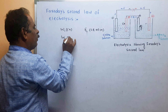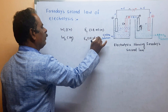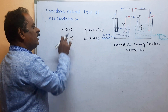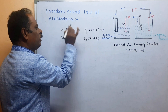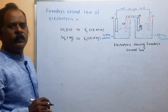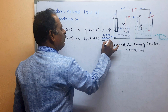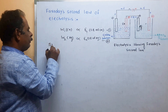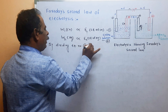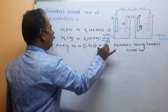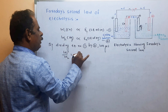W2 is the weight of silver deposited on the cathode and E2 is the chemical equivalent of silver (Ag). Since the two electrolytic solutions are connected in series, the amount of substance deposited is directly proportional to the chemical equivalent: W1 is proportional to E1, and W2 is proportional to E2. By dividing equation 1 by equation 2, we get W1/W2 = E1/E2.